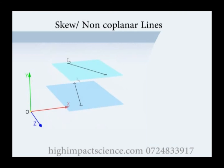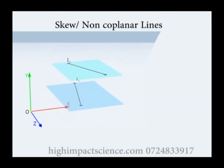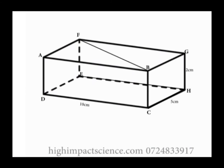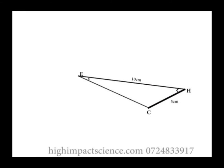We do this by projecting one of the lines onto the plane containing the other line. For instance, the projection of line 1 onto the blue plane will form an intersection with line 2, and the angle can then be measured. For example, in this figure, lines FB and EH are skew. To find the angle between them, we project FB onto the plane CDEH, where it will be mapped onto EC, forming a right-angled triangle. Using trigonometric ratios, tan x equals 5 over 10, which is 0.5. The tan inverse of 0.5 is 26.6 degrees.